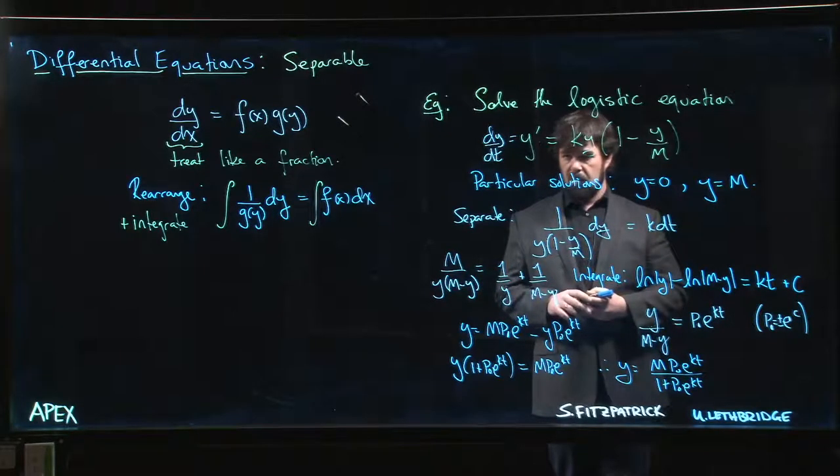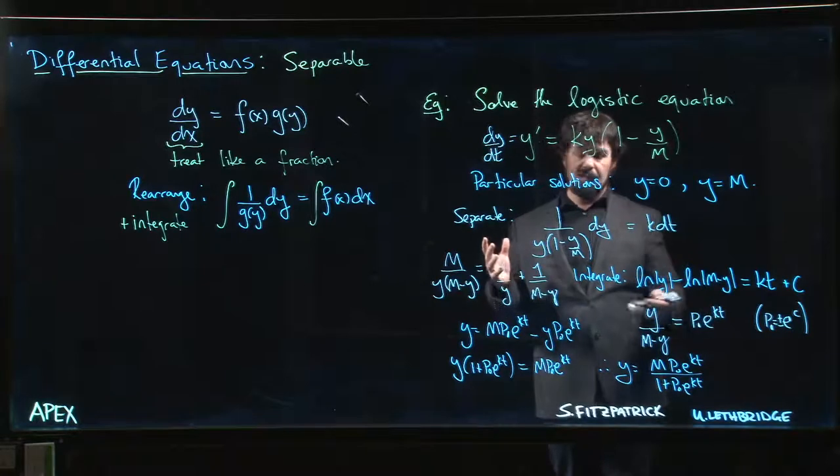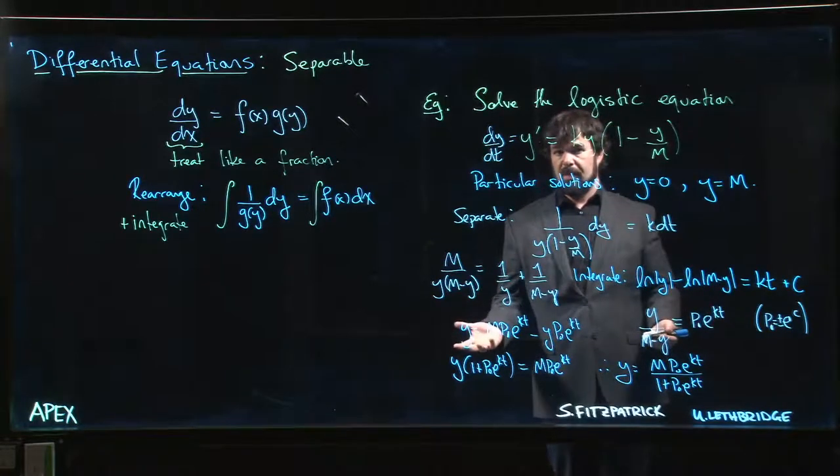So all of that is sort of captured in this equation here. And so certainly we probably feel like this is a better model for population growth than exponential growth. It's maybe not the best model, but it's better than exponential growth.